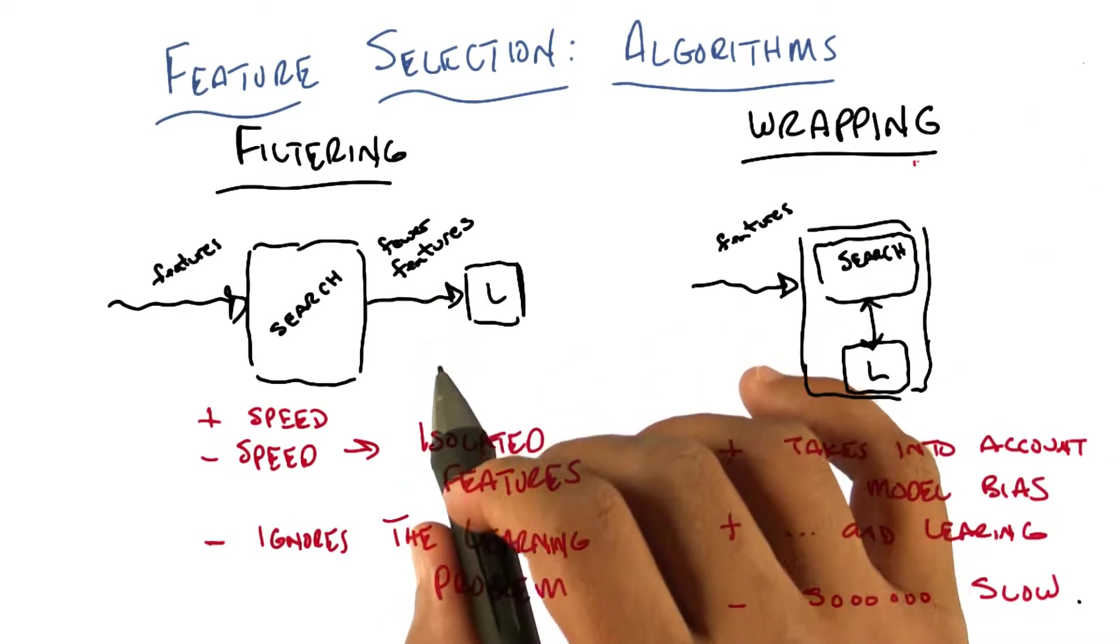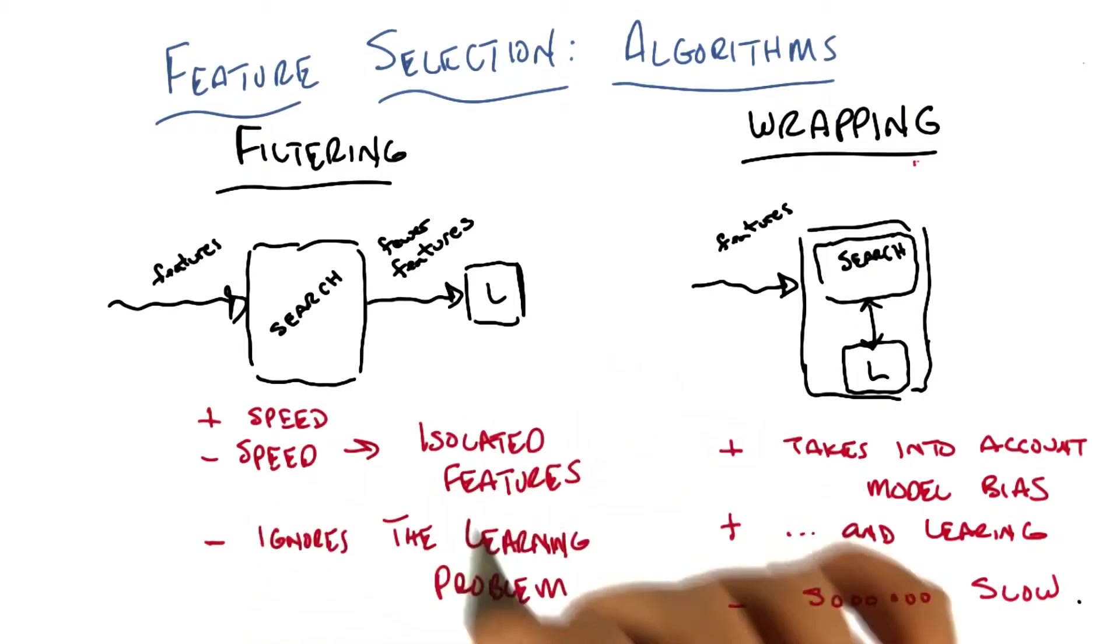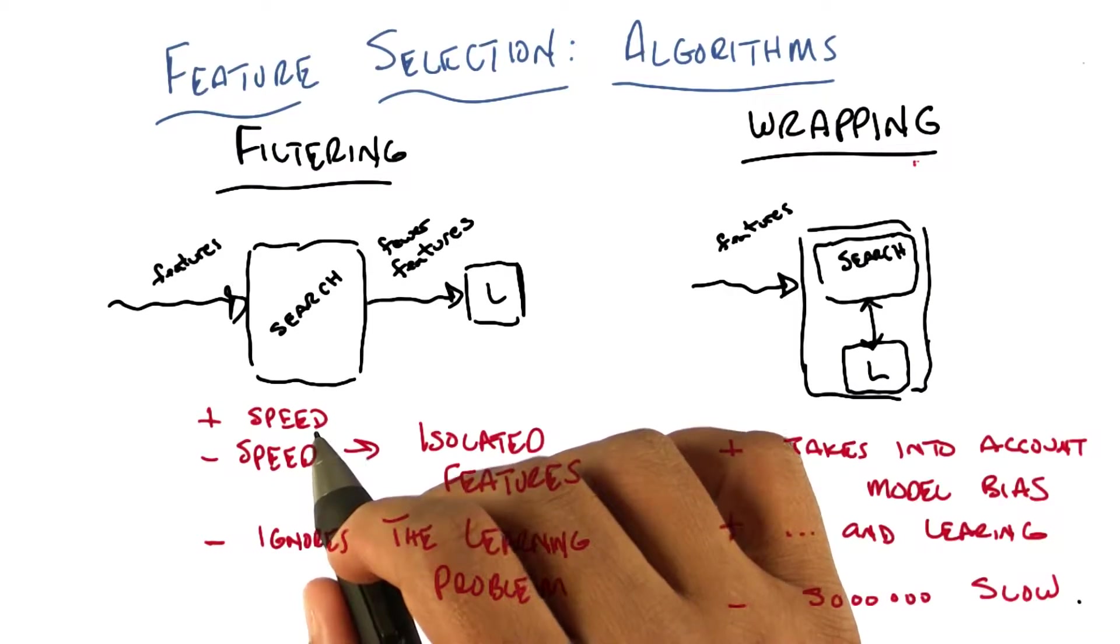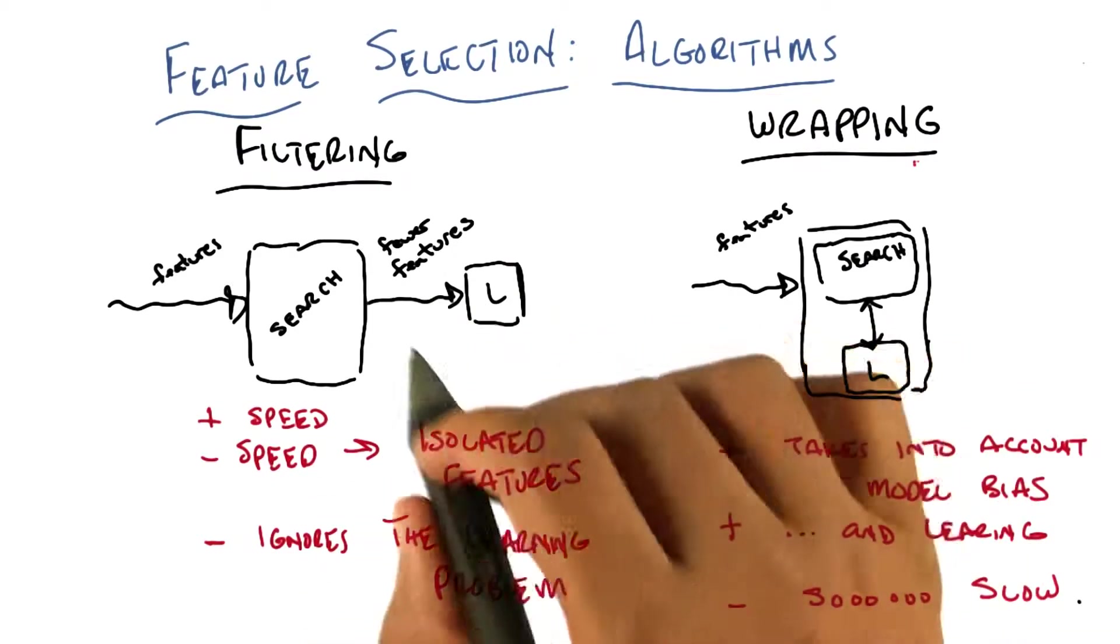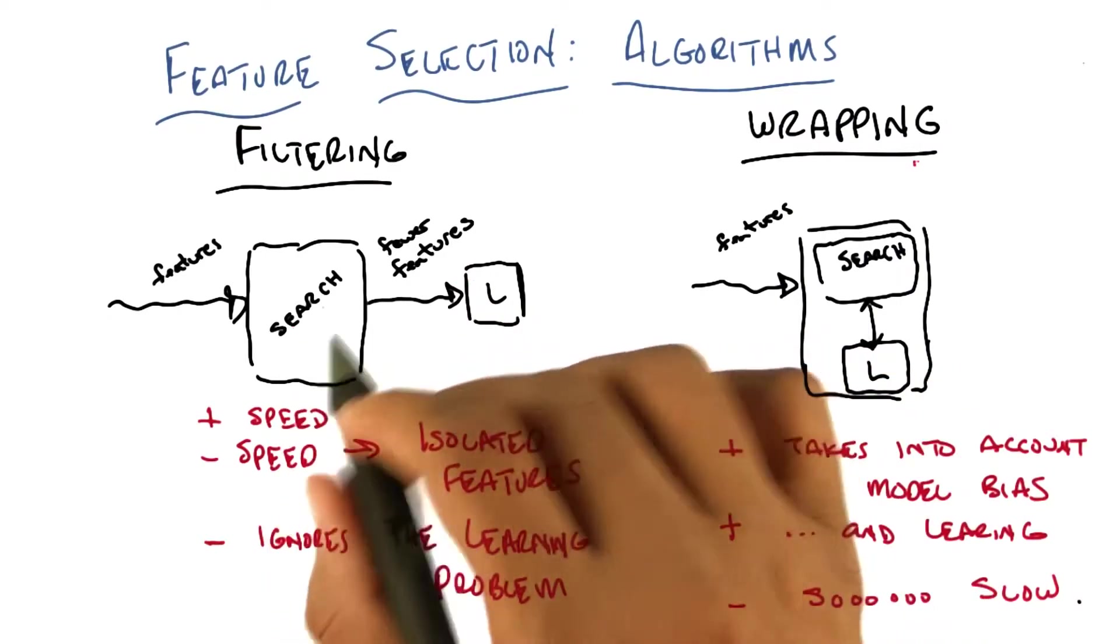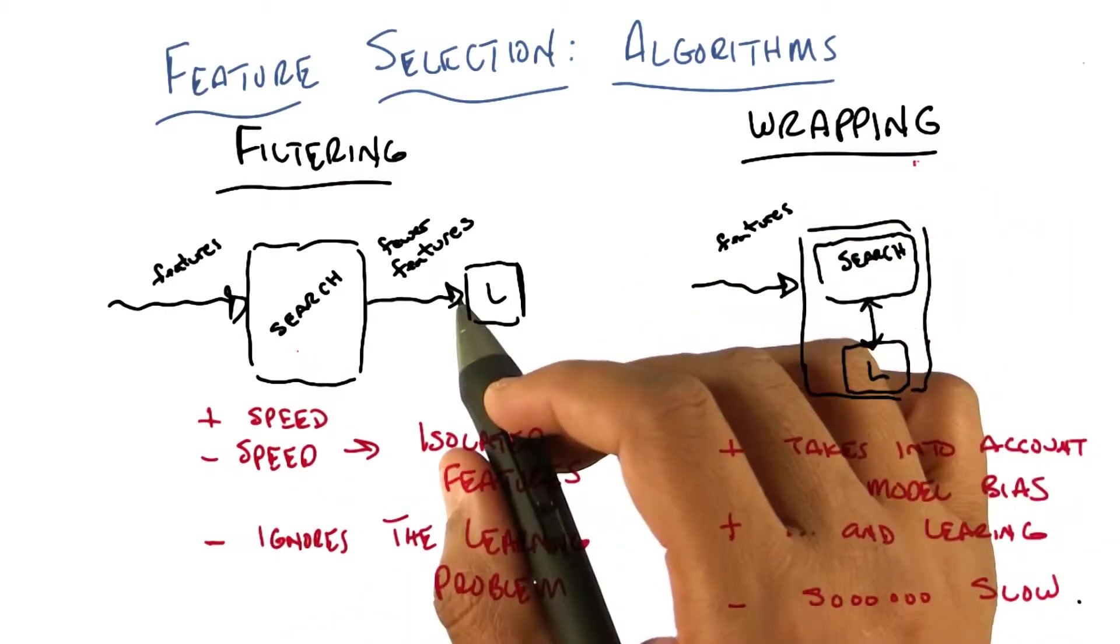So, in the filtering case, one of the things that you didn't say explicitly, but I think was built into what you said, is a question of speed. Filtering is faster than wrapping because you don't have to worry about what the learner wants. You don't have to worry about paying the cost of what the learner is going to do. You can basically just apply any fast algorithm you might imagine that takes a look at the features and does some sort of filtering.